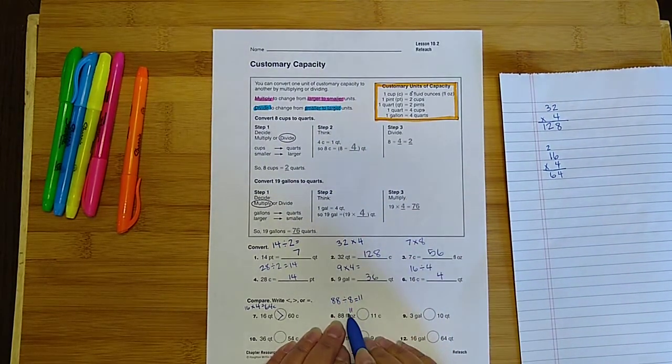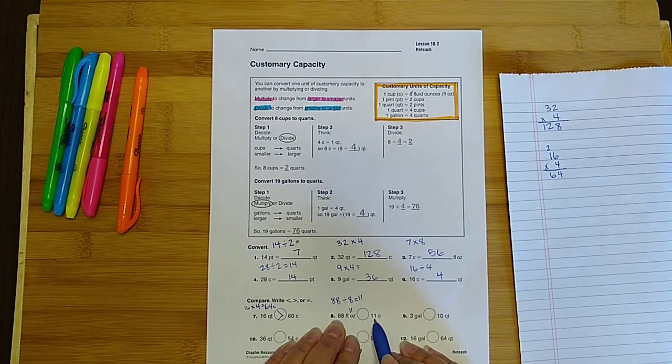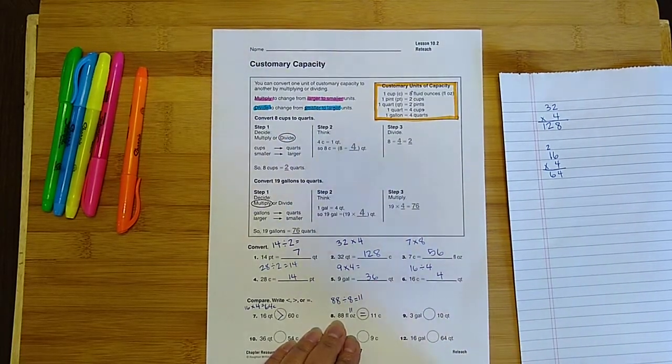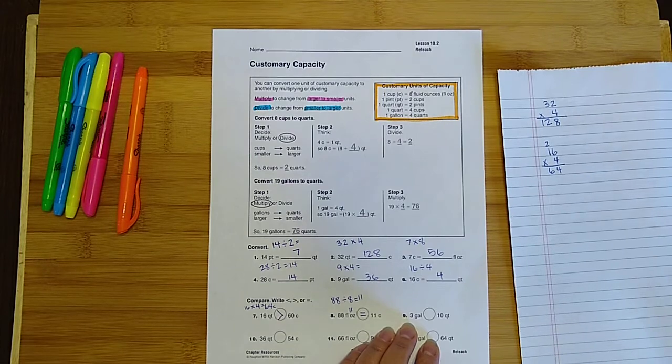Well hey, if it's an 11 on that side, and it's 11 on this side, we are going to have an equal sign. Awesome.